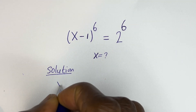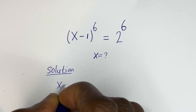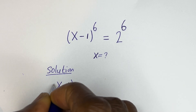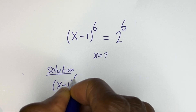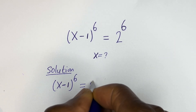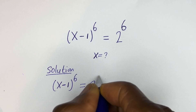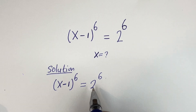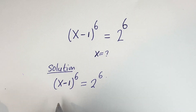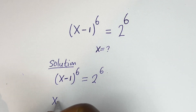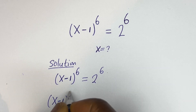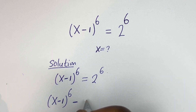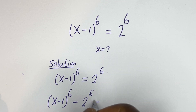We have x minus 1 to the power of 6 is equal to 2 to the power of 6. Let's bring this to this side: x minus 1 to the power of 6 minus 2 to the power of 6 is equal to 0.